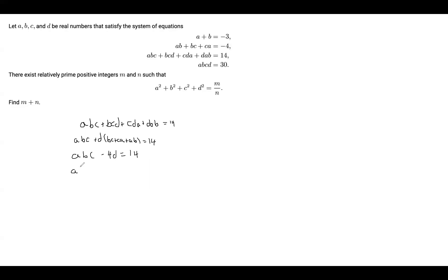So abc equals 14 plus 4d. And from the fourth equation, abcd equals 30, and since abc equals 14 plus 4d, we get (14 plus 4d) times d equals 30.